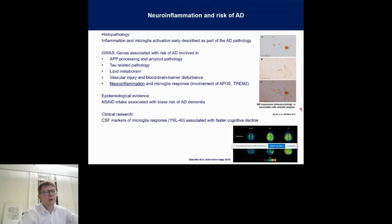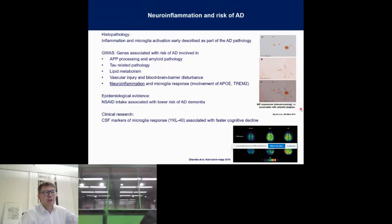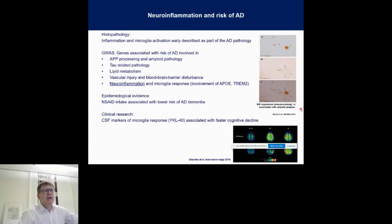Just to mention GWAS, where genes were associated with amyloid pathology, tau pathology, lipid metabolism, and vascular injury, and some other seemingly less important aspects — but also, as a major factor seemingly contributing to risk, polymorphisms in genes related to neuroinflammation and microglia response. In particular, two that you probably all know: APOE and TREM2.